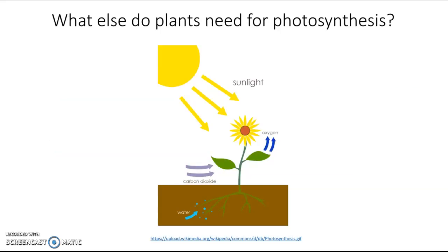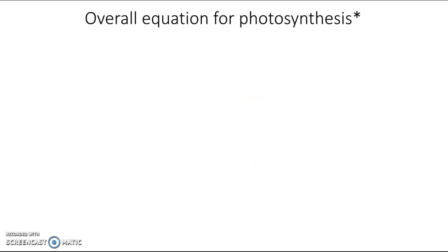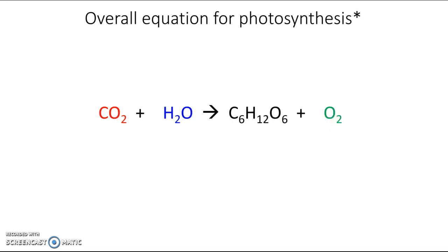So those are chloroplasts. What else do plants need for photosynthesis? They need sunlight, carbon dioxide, and water. Putting all these together, we get an overall equation: plants take carbon dioxide and water and transform them into a sugar and oxygen. Balancing the equation gives us six CO₂ and six H₂O producing one glucose and six O₂. This is essentially the opposite of the balanced equation for cellular respiration — the atoms in CO₂ and water are rearranged and new bonds are formed to make the sugar molecule.